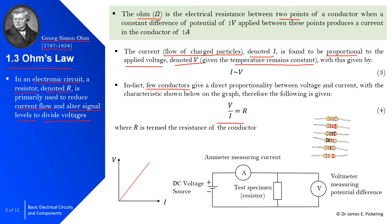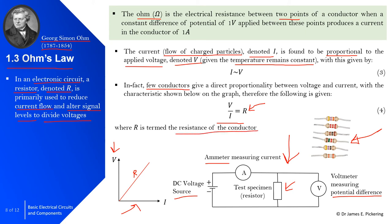The relationship between current and voltage gives V/I = R, where R is the resistance. In this schematic we have a DC voltage source, a test specimen resistor, an ammeter measuring current, and a voltmeter measuring potential difference. The graph shows the linear relationship between current and voltage, with the slope representing resistance R. Different resistors can be placed into the circuit to reduce current flow, alter signal levels, or divide voltages.